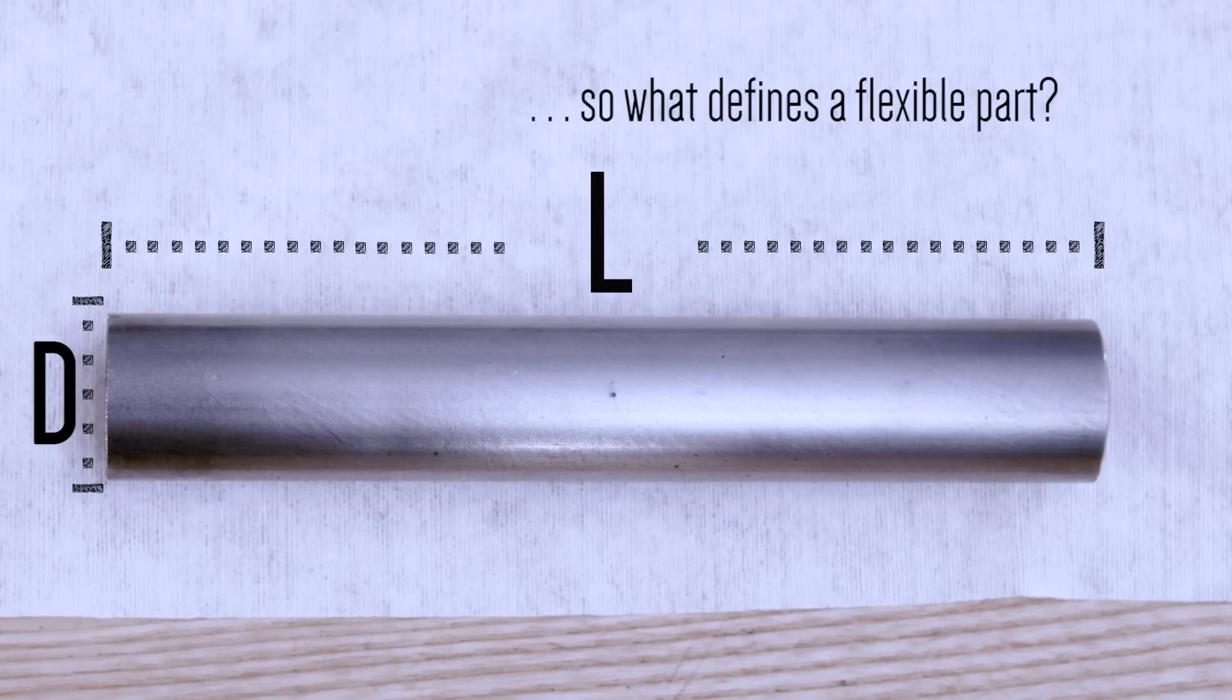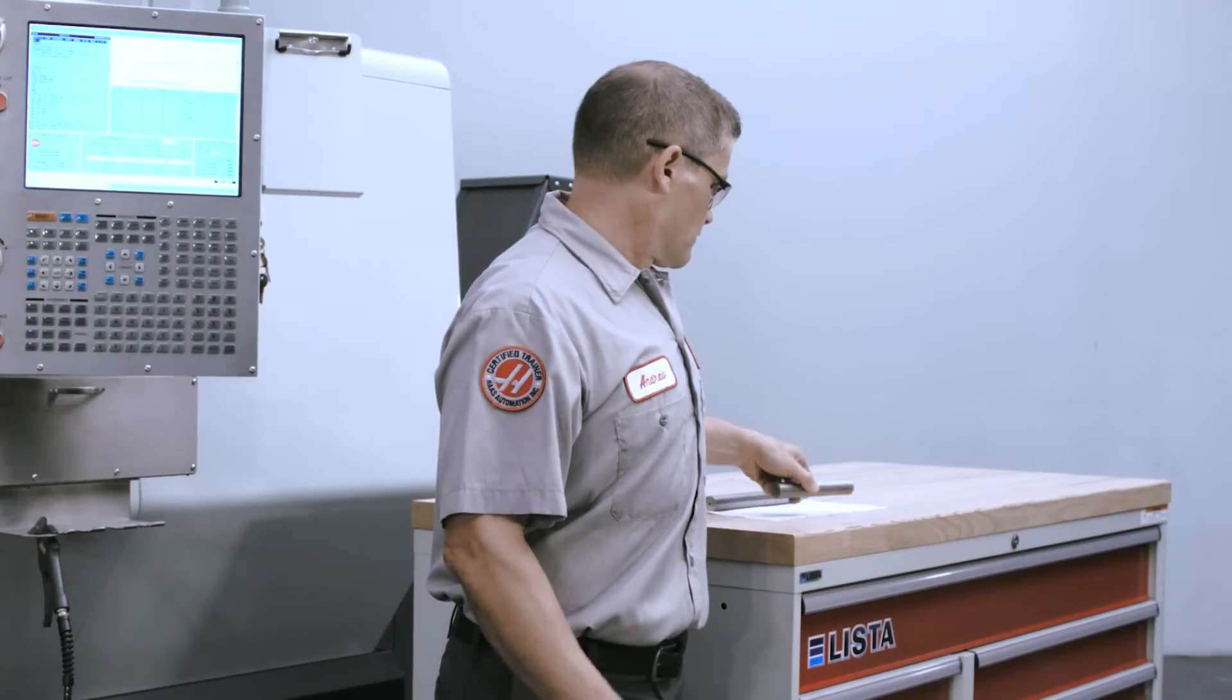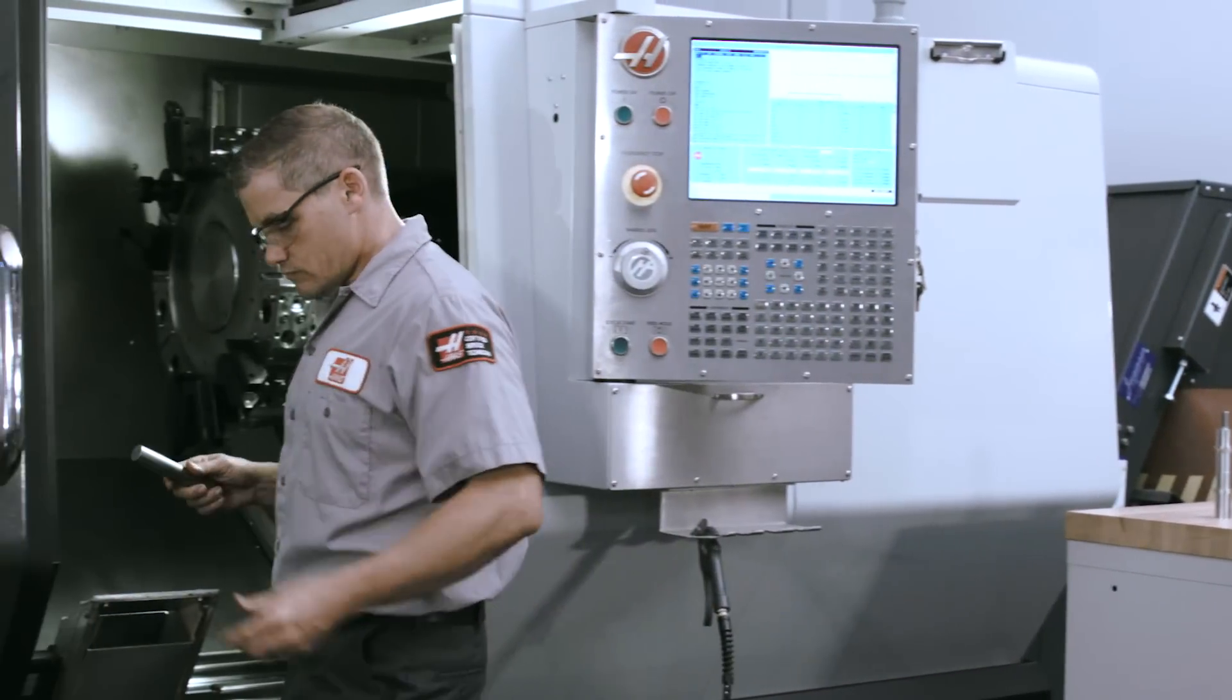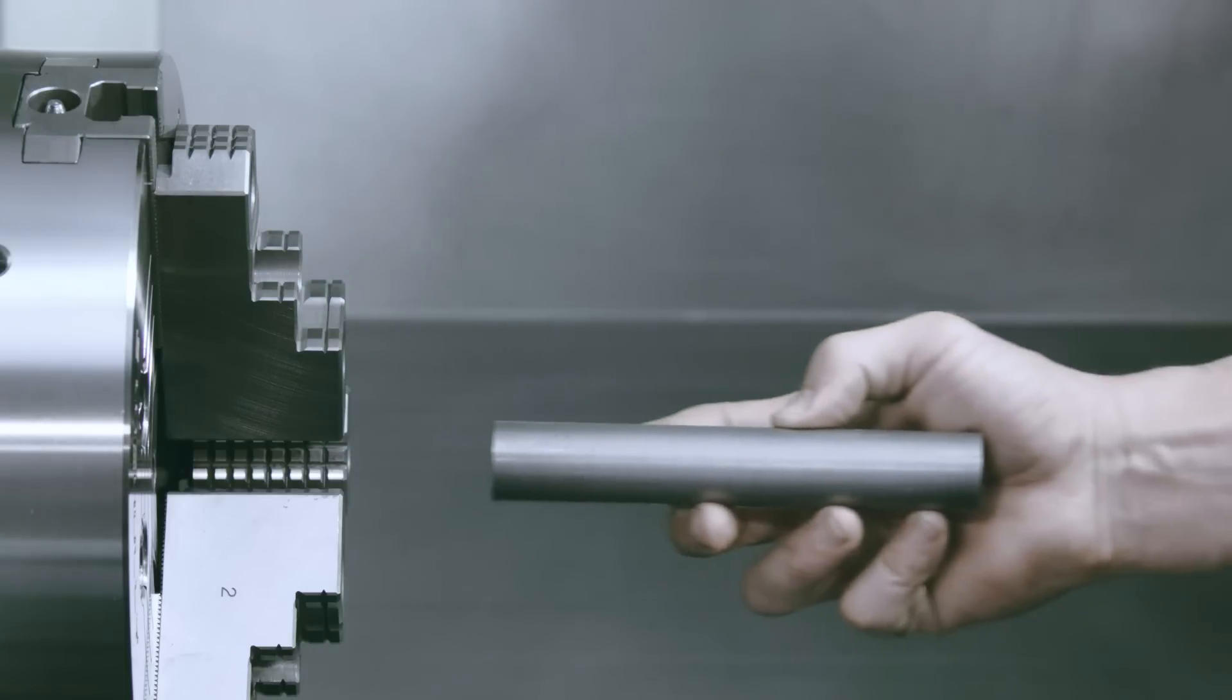But let's be more specific. It really isn't enough just to look at the L to D ratio of the part by itself. When we grip the part, the effective L to D ratio changes.